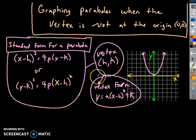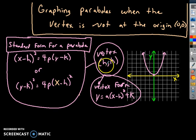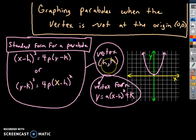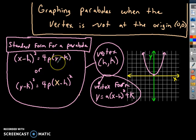Those numbers h and k still appear in the new formulas, except now they look a little different and occur in different places, but they still represent the vertex. How we find it: whatever the sign is on h, you get the opposite sign on the vertex. Whatever the sign is on k, you get the opposite sign on the vertex. Also, h always goes with x and k always goes with y.